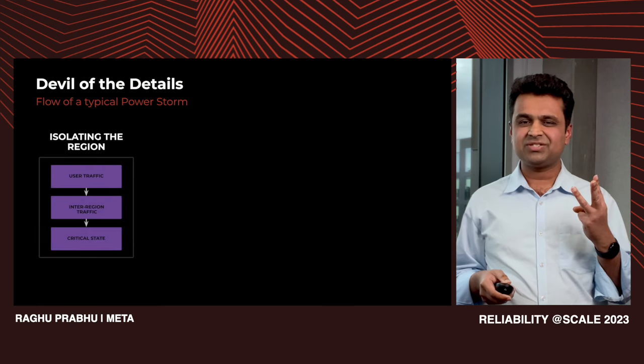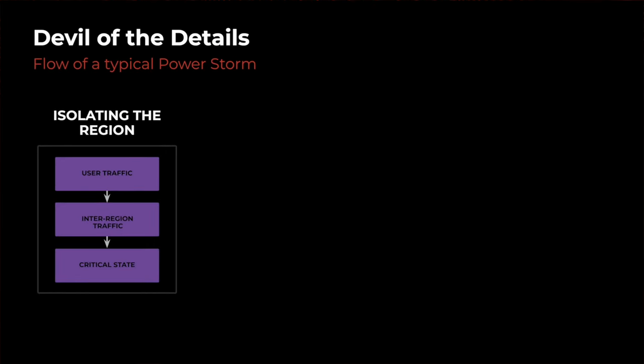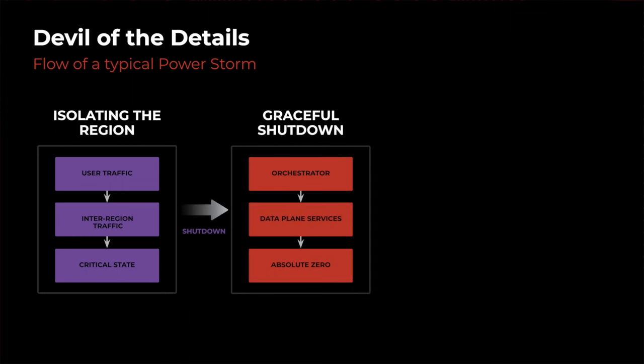A typical power storm has three stages. First, isolating the region — cordoning it off by moving in-region and user traffic away through WIPs, with critical state transfers including replica rebuilds and database primary promotions. Second, graceful shutdown — all data plane services are shut down gracefully and reaped through an asynchronous mechanism mediated by our container orchestrator, which needs to be available all the way to the end. Subsequently, all servers are shut down remotely and the region is brought to an absolute zero state where nothing is running. We leave the region in this state for a few hours.